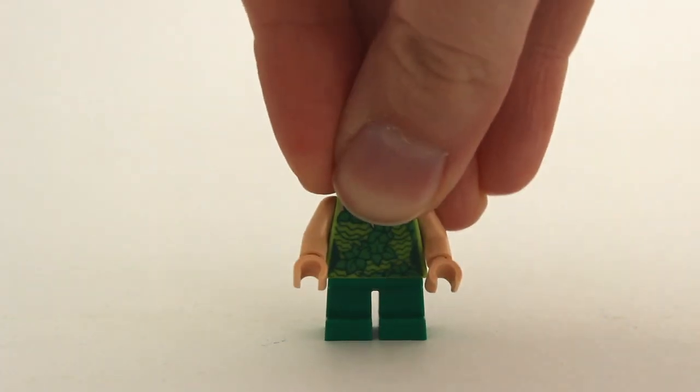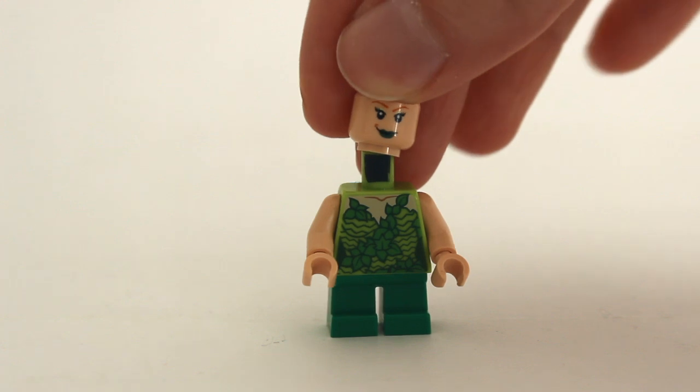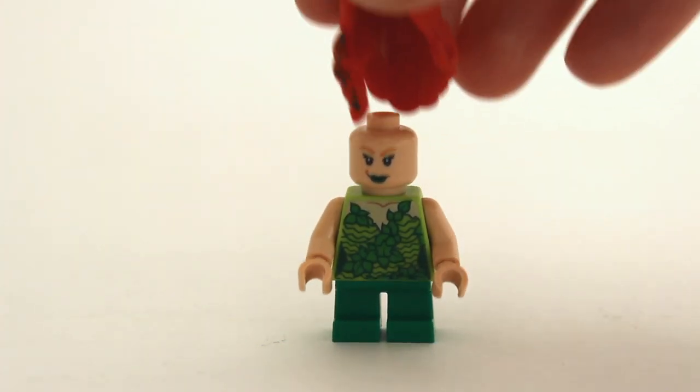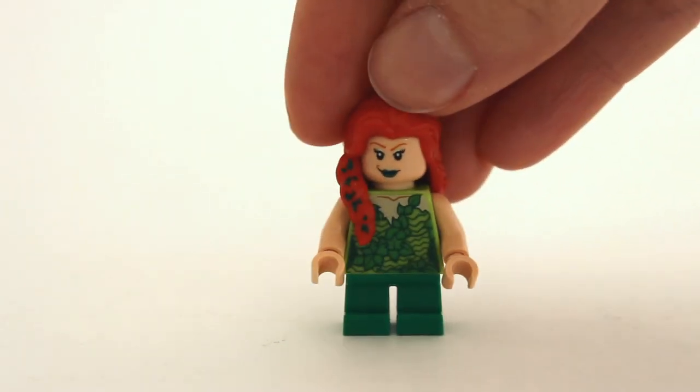The minifigure gets short green legs, an original Poison Ivy torso, and the hair from Superhero High.